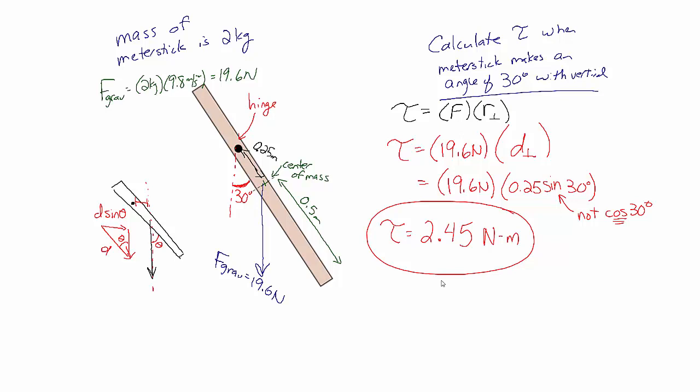Calculating torque due to the force of gravity — gravitational torque — is not any different than calculating torque in other situations, but a lot of situations involve the force of gravity, making it a very important concept in rotation. There are going to be many problems involving gravitational torque, either to figure out how much force is needed to keep something from rotating — rotational equilibrium problems — or to use the gravitational torque to find the angular acceleration of an object. Both of those are things we'll look at in later videos.